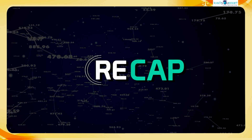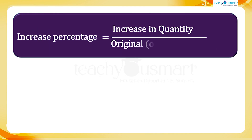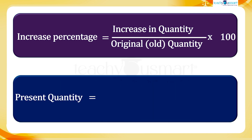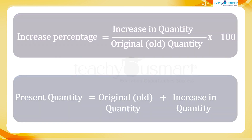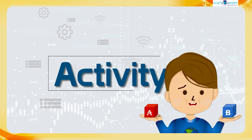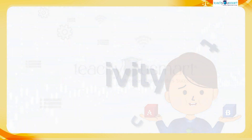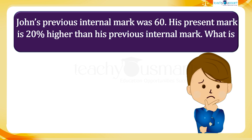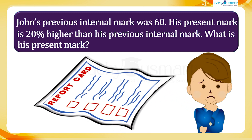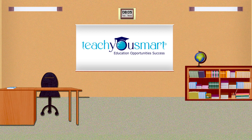Before winding up, let's have a quick recap. Today we discussed how to find the increased percentage and present quantity. Let's check how much you understood by doing an activity. Mr. John's previous internal mark was 60. His present mark is 20% higher than his previous internal mark. What is his present mark? That's all for now, see you all in the next class with another interesting topic. Thank you.